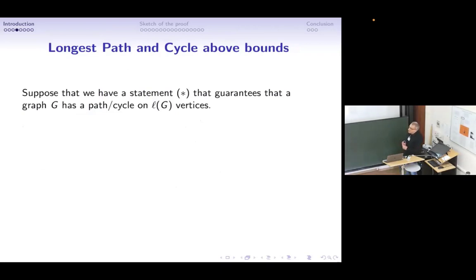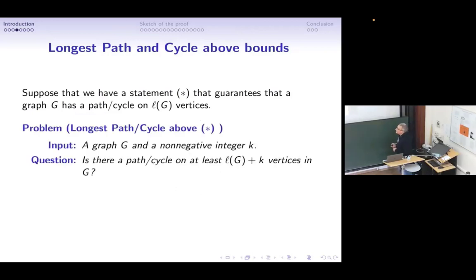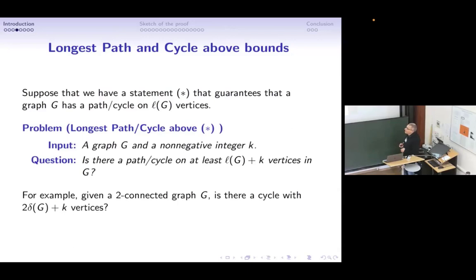Because we are doing parameterized complexity, we consider the following problems. Suppose we have a statement that guarantees that graph G has a path or cycle with, say, L(G) vertices. Then we can state the following generic problem: longest path or cycle above bound. We have a graph and integer K as parameter, and we ask: is there a path or cycle with at least L(G) + K vertices? For example, given a two-connected graph, is there a cycle with at least 2δ(G) + K vertices?